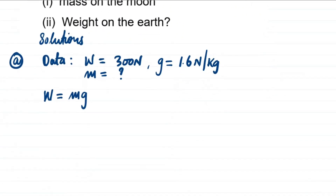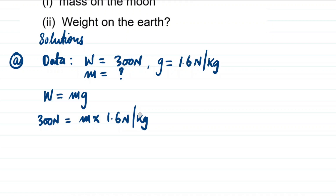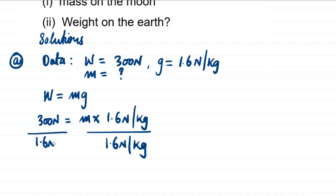Once you know the variables, substitute into the formula. Weight = 300 newtons, so: 300 N = m × 1.6 N/kg. Since we are looking for the unknown mass, we isolate it by dividing both sides by 1.6 N/kg to maintain the equality. Dividing both sides by 1.6 N/kg cancels the unwanted value on the right-hand side.